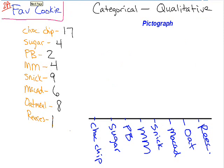Pictograph. Basically, what a pictograph is going to do is have a visual representation — usually something to do with what you are working on. So in this case, since we're doing favorite cookies, we'll use class 2A's data. I'm going to draw a cookie, since chocolate chip is my personal favorite. A pictograph has to have a key, so we're going to let that cookie represent so many people.